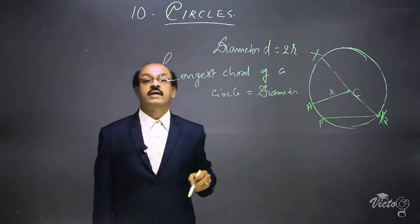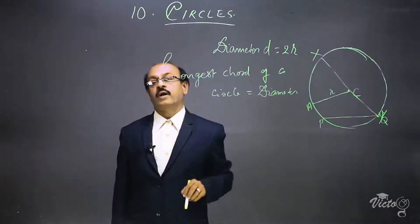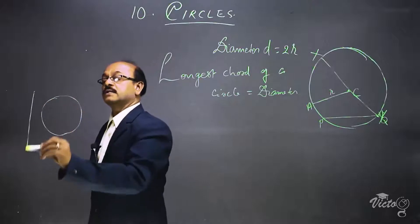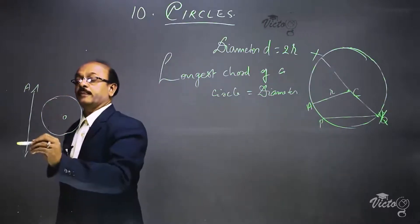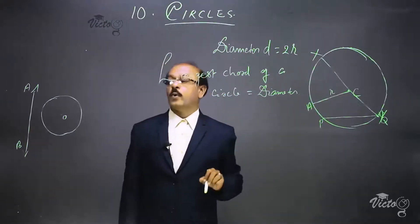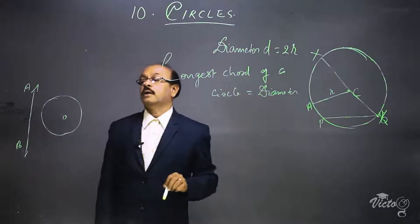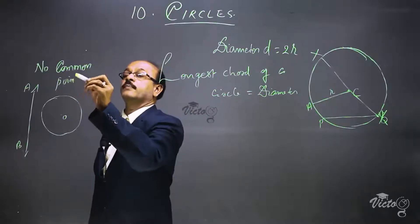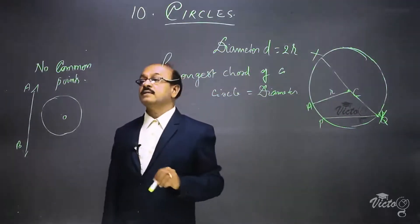A circle and a line can exist in a plane in three different ways. Here is a circle and here is a line. The center of the circle is O and the line is AB. The speciality of this line and circle is that there is no common point between the line and the circle — no common points. In this way, a line and a circle can exist in a plane with no points in common.